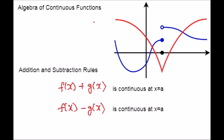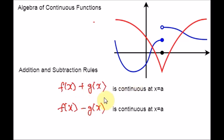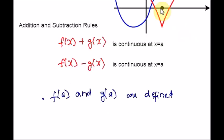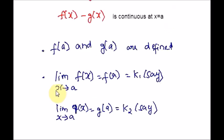Now let's see the proofs for these two rules. We have to check the continuity of the addition at the point x equal to a. Therefore, we will need to check the three conditions of continuity — you can refer to a previous video where we discussed the definition of continuity along with the three conditions. Note that since the functions f and g are continuous at x equal to a, the three conditions are automatically satisfied. The first condition is that f(a) and g(a) are defined. The second condition is that the limit as x tends to a of f(x) equals f(a) — let that be k1.